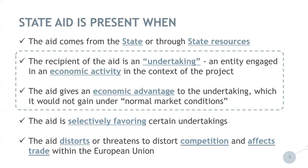To conclude, the classification of an undertaking is specific to project activities, not to the status of an entity such as public or private. What determines whether an entity is an undertaking is whether it carries out economic activities in the context of the project. An undertaking can be a public body, an NGO, a university, or a private firm.